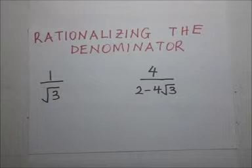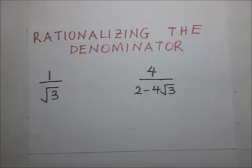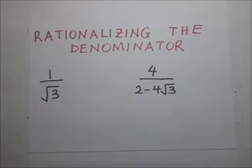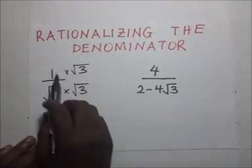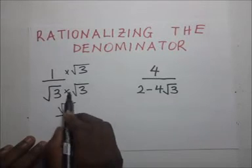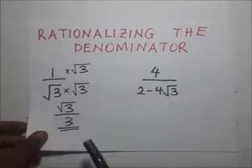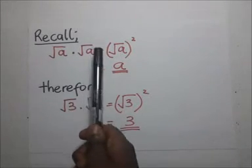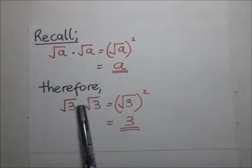Sometimes we have numbers with a single term in the denominator. Expressions that have a one-term denominator are rationalized by multiplying by an equal term. For example, if the denominator is root 3, you multiply by root 3. Remember that root of a times root of a gives us a — so root 3 times root 3 gives us 3. When you multiply the root of a number twice, you get that very number.